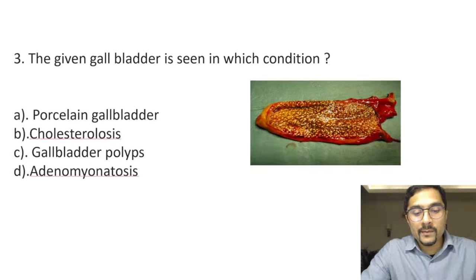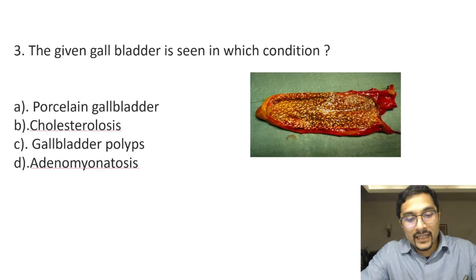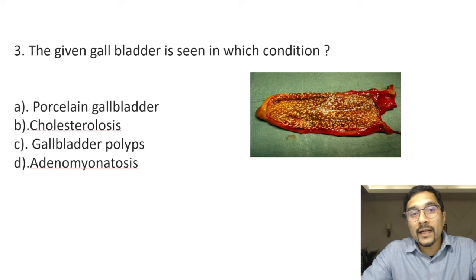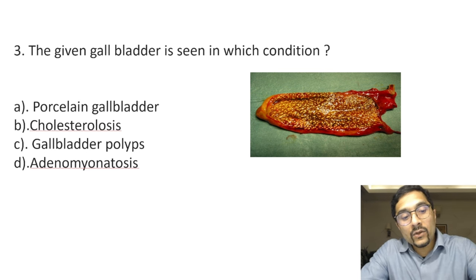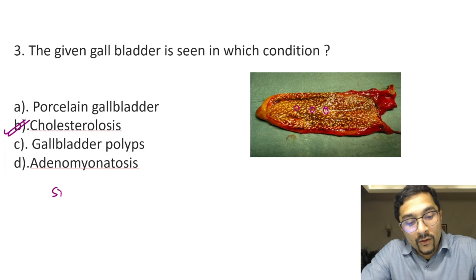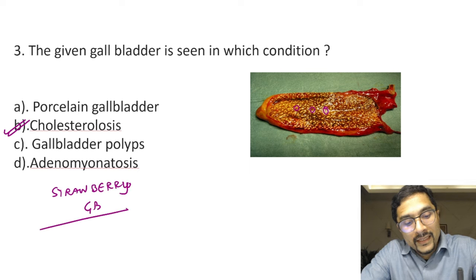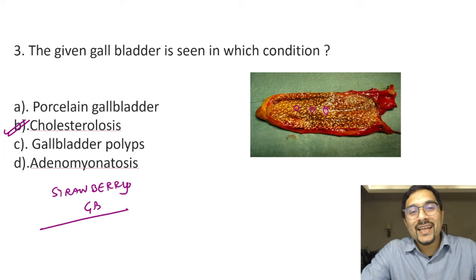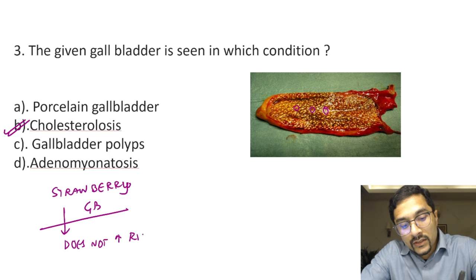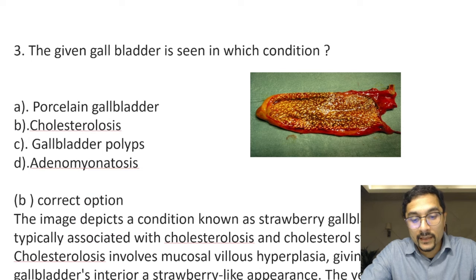The third question, asked quite a few times in the exam: the image shows a dissected gallbladder cut open with yellow specks in the wall. This is the classical sign of cholesterosis, also known as strawberry gallbladder, where there is deposition of cholesterol crystals in the wall of the gallbladder. Importantly, cholesterosis or strawberry gallbladder does NOT increase the risk of gallbladder cancer — this is important to remember.